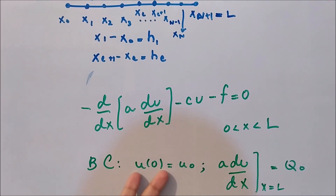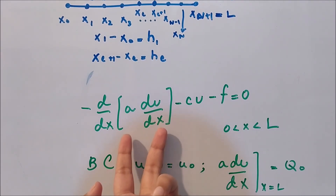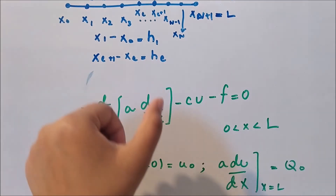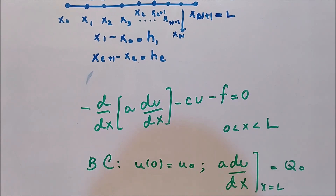This equation has boundary conditions: at x=0 the solution is a certain constant, and at the other end the derivative term equals some other constant — which you can relate to the weak form discussed in other videos of this course. We will meet in the next video with the second step: the derivation of the element-level equations. Please subscribe to the channel to watch more upcoming videos. We will meet in the next video — take care, goodbye.